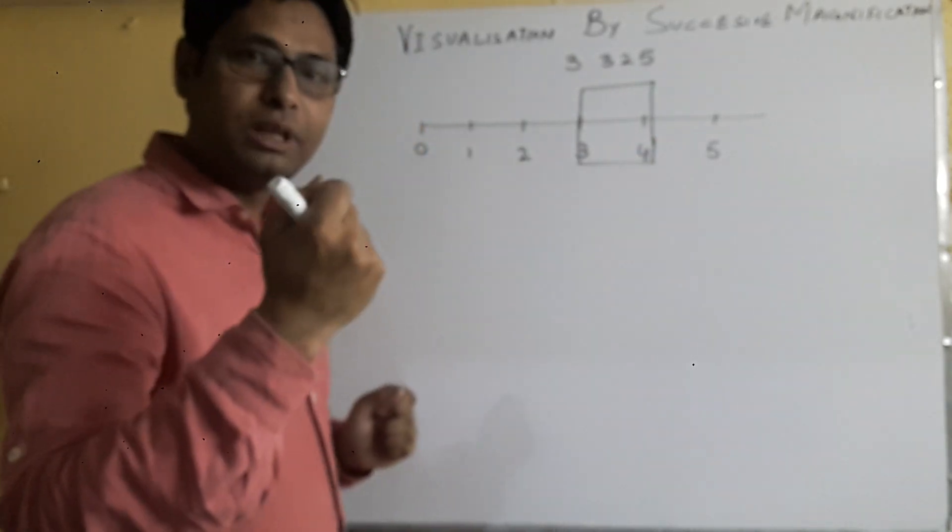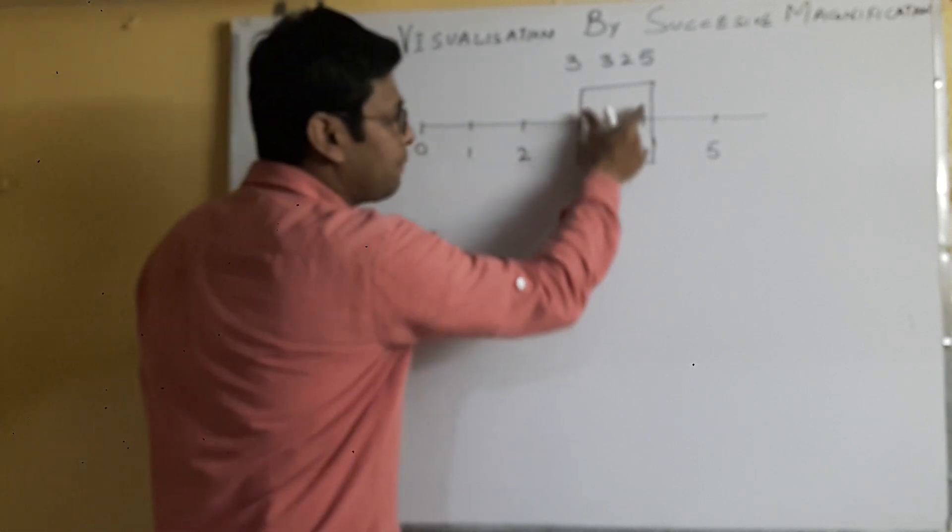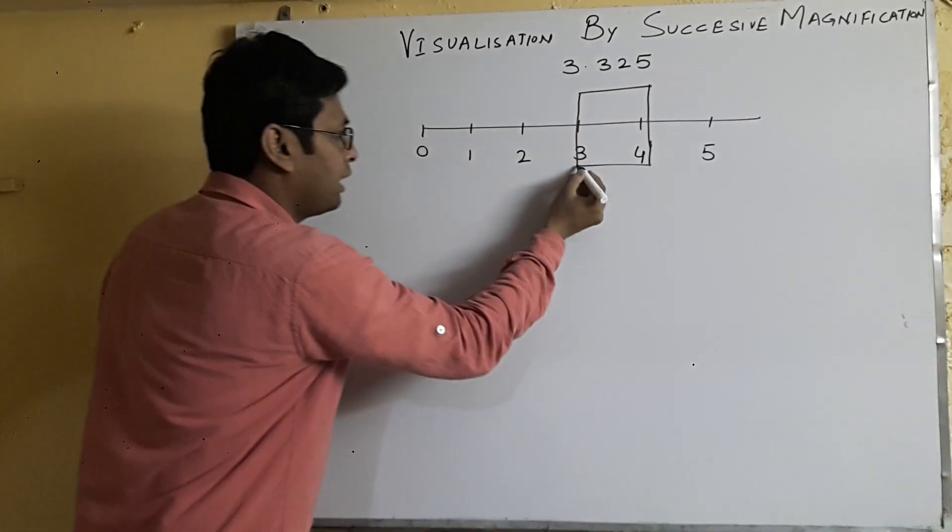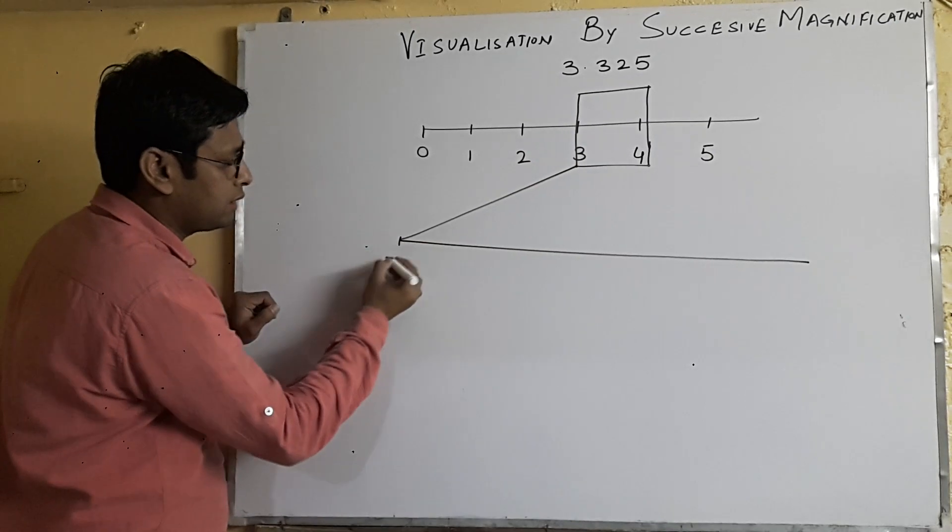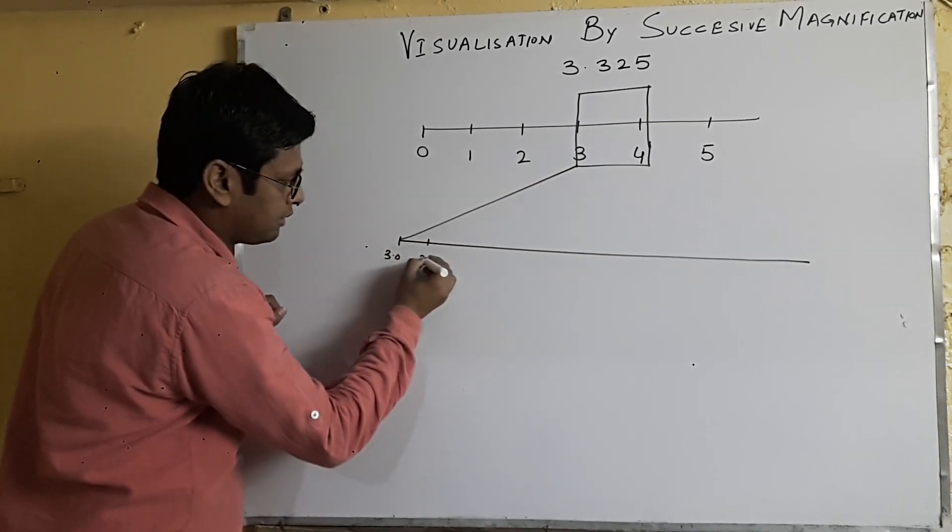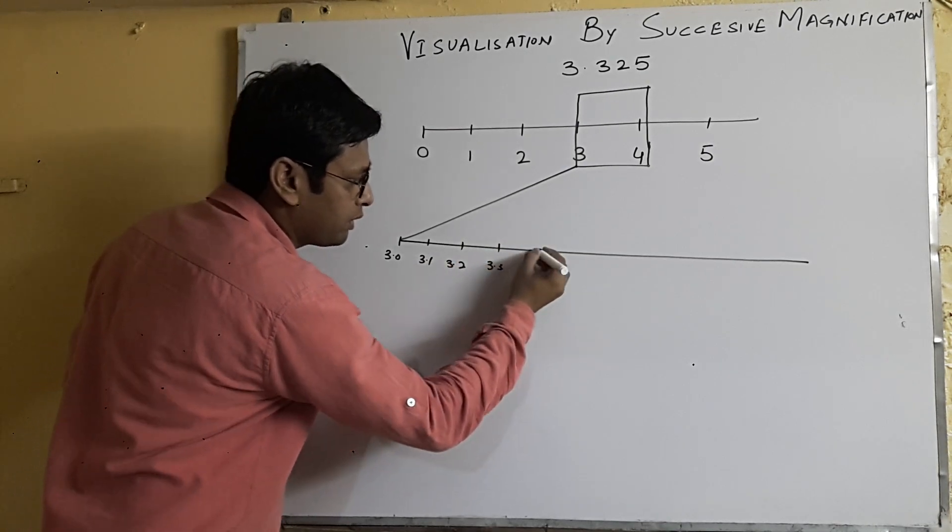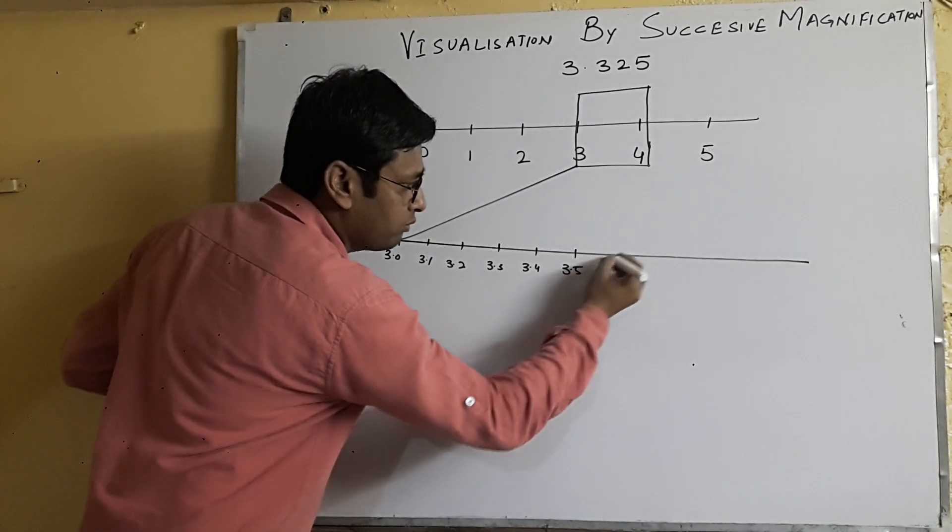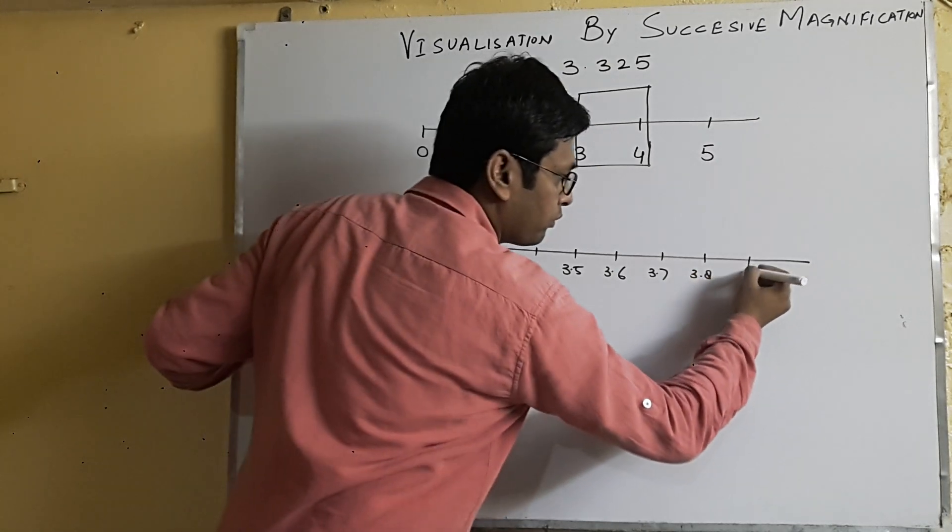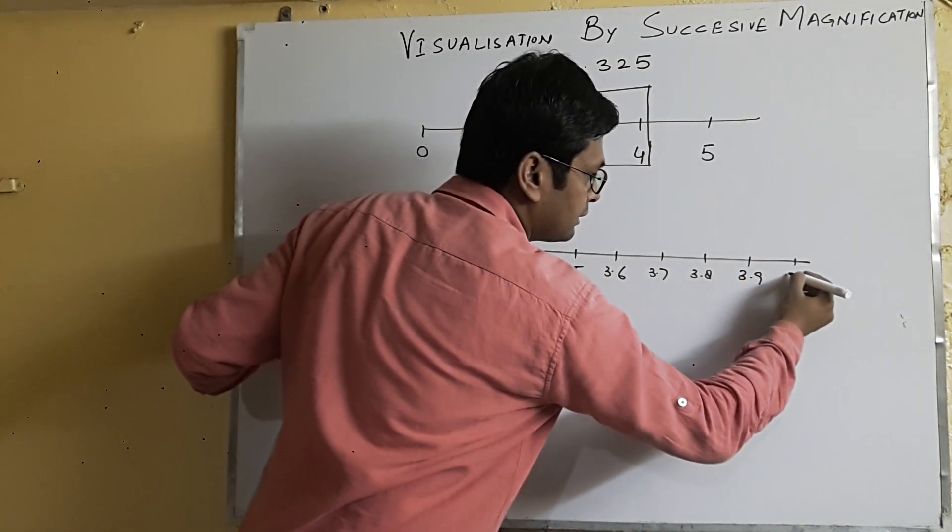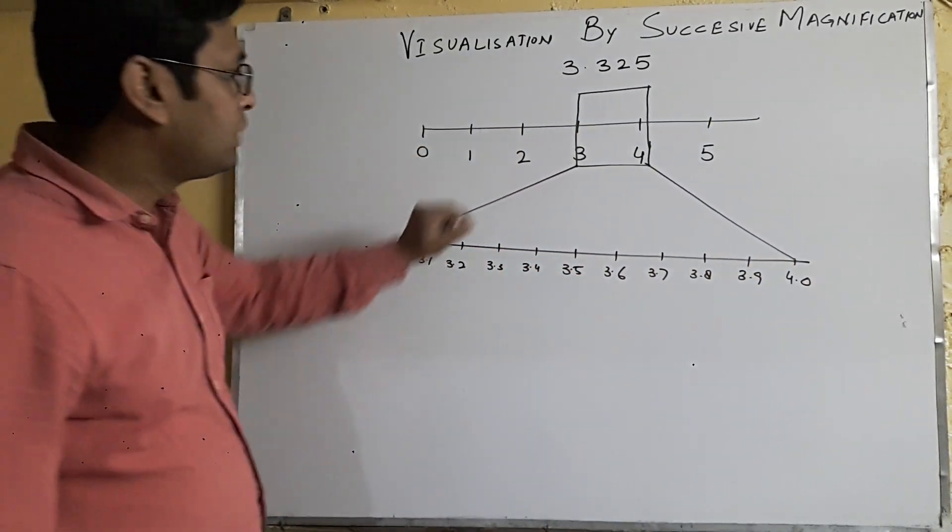So I'm going to zoom the 3 to 4 portion only, or I put the magnification glass only on 3 to 4. I'm going to magnify this area 3 to 4, and it will magnify like this: 3.0, now 3.1, 3.2, 3.3, 3.4, 3.5, 3.6, 3.7, 3.8, 3.9, and this is 4.0.